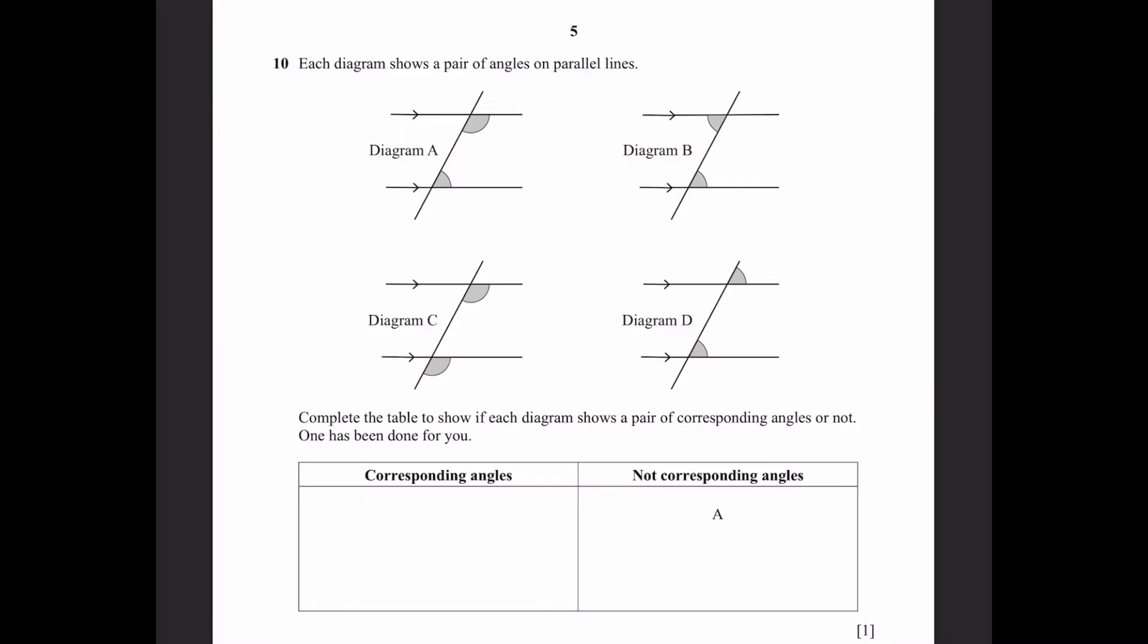Question 10. Each diagram shows a pair of angles on parallel lines. Complete the table to show if each diagram shows a pair of corresponding angles or not. A is already done for you. That's not corresponding angles, since these two are actually called allied angles. They both are not equal. They add up to 180 degrees. These two are corresponding angles, though, but that's not given. Diagram B. These two are actually equal, but then they're not corresponding angles. They are another type called alternate angles. So, we can write B over here.